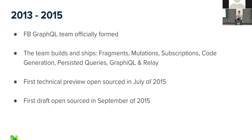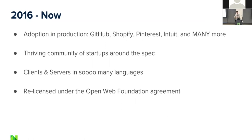The last phase was scaling updates. Like so many things, everything was live-polling originally, just hitting that endpoint over and over. Eventually they launched subscriptions. Along the way a whole bunch of other tools emerged — code generation, persistent queries, GraphiQL, Relay, and a lot more. Finally in 2015 they did their first technical preview mid-summer and open-sourced it towards the end of the summer.